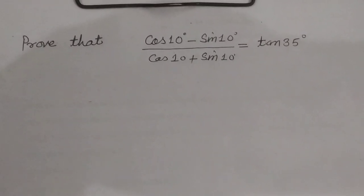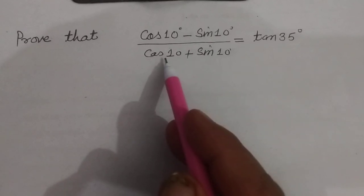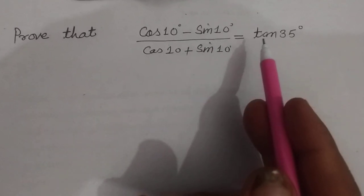Hello student, warm welcome to this YouTube channel. Prove that cos 10 minus sin 10 upon cos 10 plus sin 10 equals tan 35.